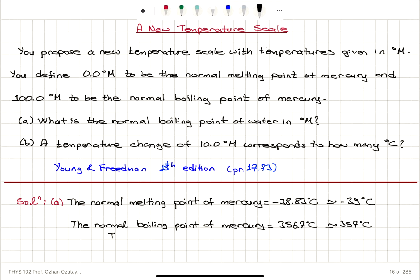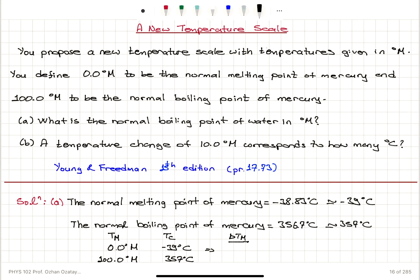So, if we have a temperature in the new M scale of 0.0 degrees M, this corresponds to minus 39 degrees Celsius. If we have 100.0 degrees M, that corresponds to 357 degrees Celsius. A change of temperature in the M scale of 100 degrees M (100 minus 0) corresponds to a temperature change in the Celsius scale of 357 minus (minus 39), so plus 39, giving 396 degrees Celsius.